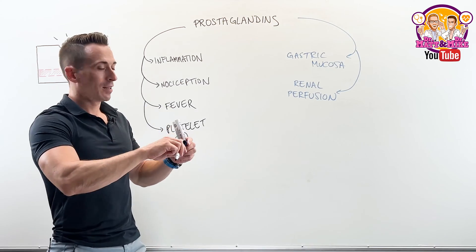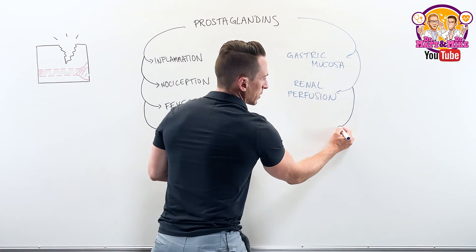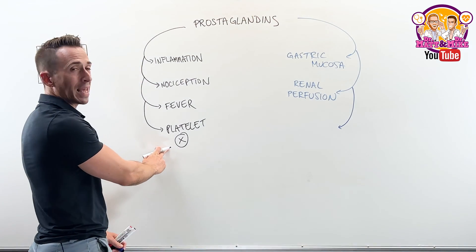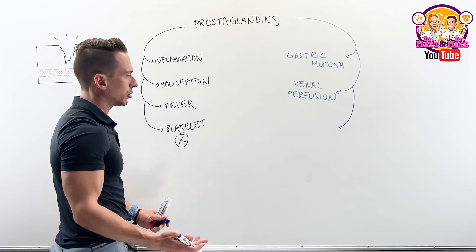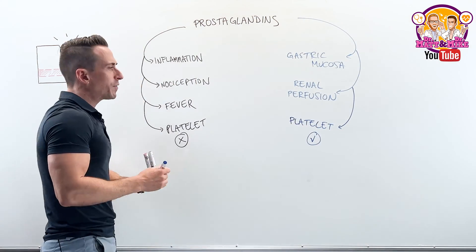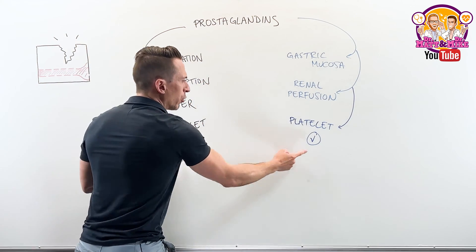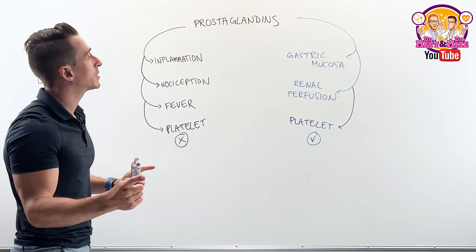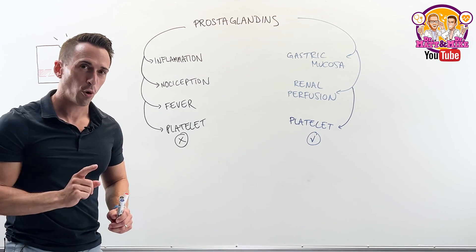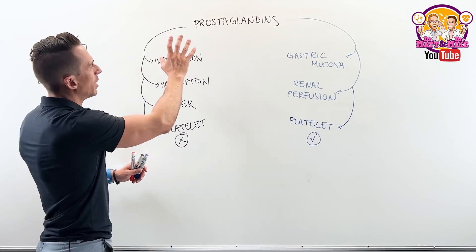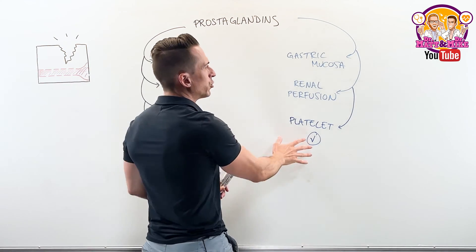What else do prostaglandins do? Interestingly, even though they can inhibit platelet aggregation, they can also stimulate platelet aggregation. How can one thing do two opposing things? Because there are many different types of prostaglandins — and I've broadly characterized them into two types here.